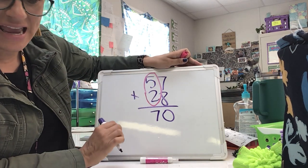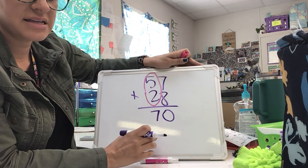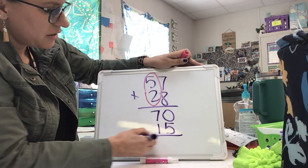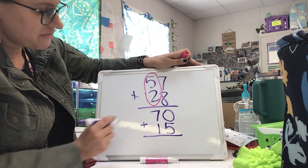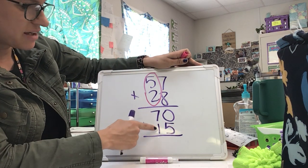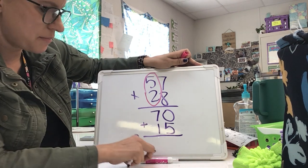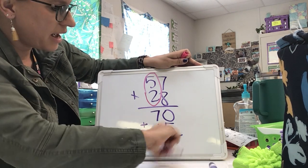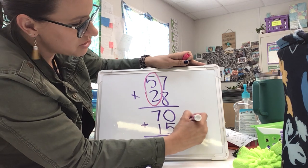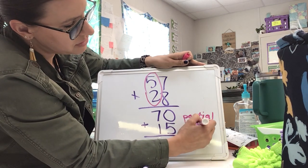Seven plus eight has a sum of 15. If I add both of these numbers, 70 and 15 together, it'll tell me what the sum is of the whole equation. These are called the partial sums.